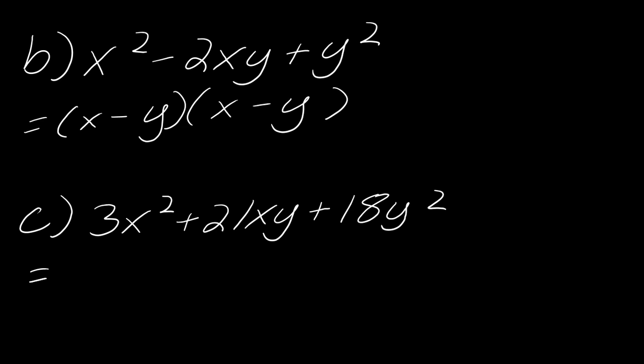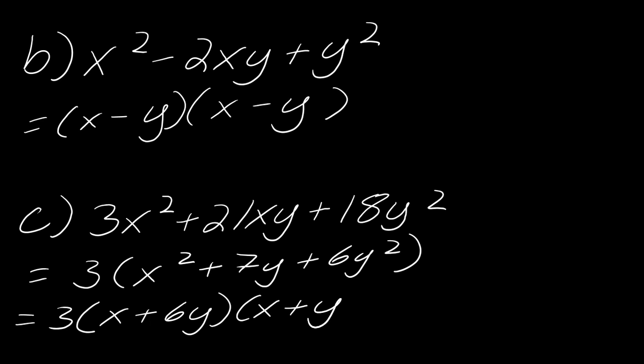Now, for this last one, notice that I've got 3x squared plus 21xy plus 18y squared. So the first thing I notice here is that we have a GCF of 3. So I can go ahead and factor that out as shown. And then I can finish factoring. So this will factor as x plus 6y and x plus y. And so that would be it.